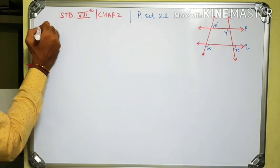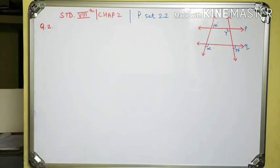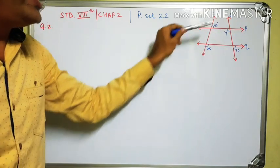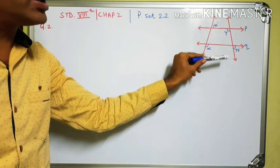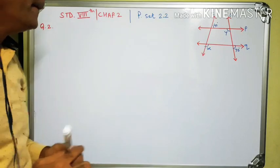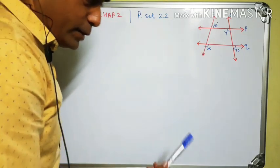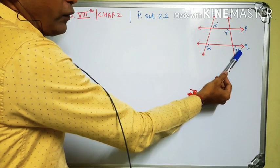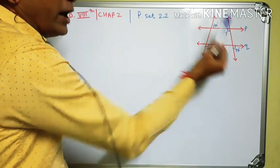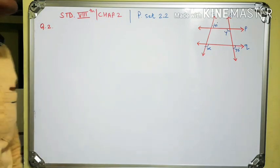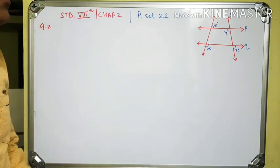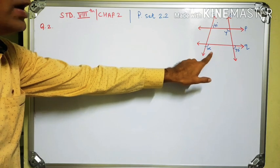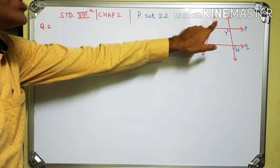This is question number 2. In this figure, line P is parallel to line Q, and lines T and S are the transversal lines of these parallel lines. One angle is 40 degrees and another is 70 degrees. We have to find the values of X and Y. To find angle X, we need to establish a relation between angle X and 40 degrees.